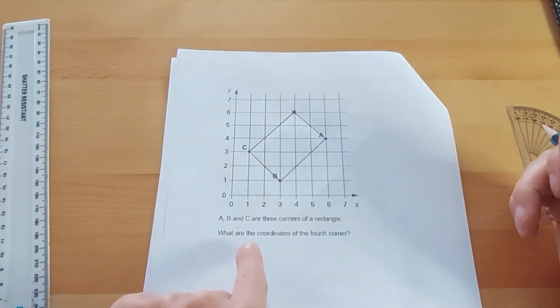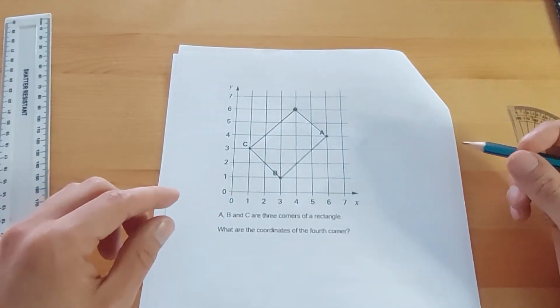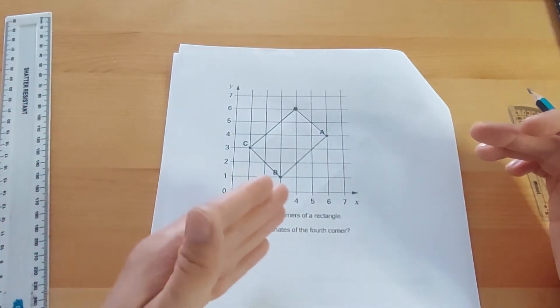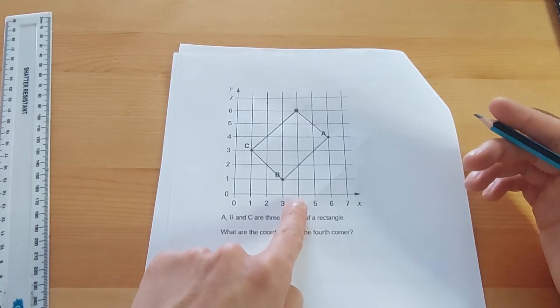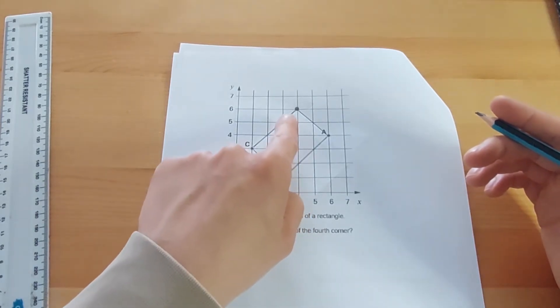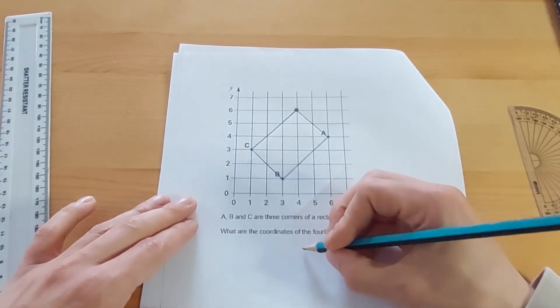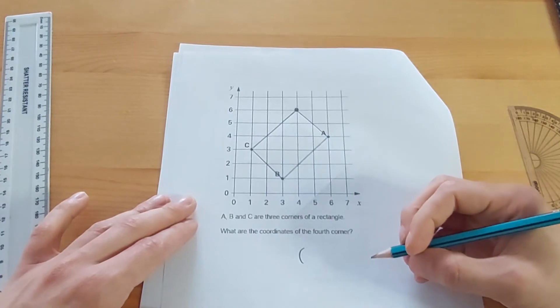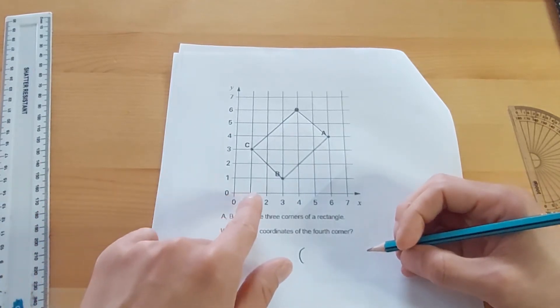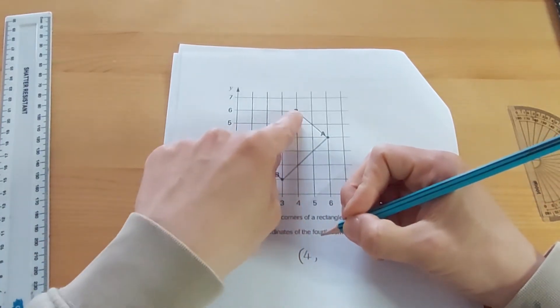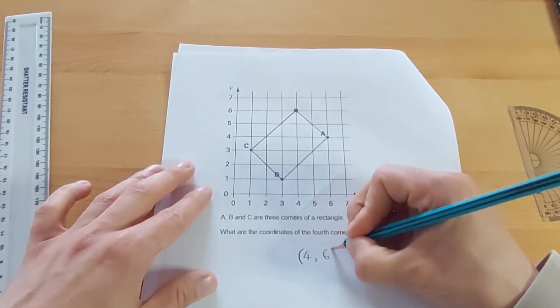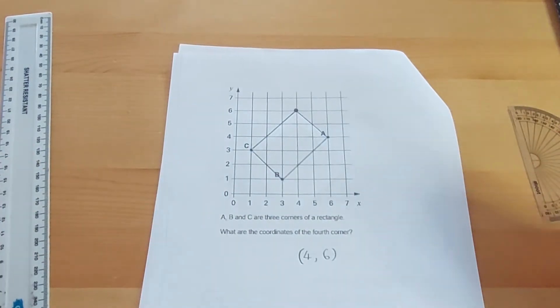But the question, once again, is what are the coordinates of the fourth corner? Remember the rule? Along the corridor, up the stairs. Along the corridor first, we get to four. Up the stairs, we get to six. Coordinates need to be written in brackets with a comma separating each number. Along the corridor, four, comma, and up the stairs, six. That's the correct answer.